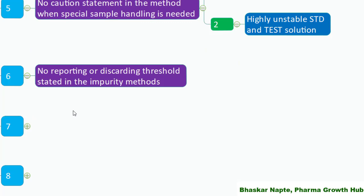The next point: no reporting or discarding threshold stated in impurity methods. It is very important to understand above which level you must start reporting results. To identify the reporting or discarding threshold, you can refer to ICH guidelines Q3A or Q3B. Clearly mention the limit of quantitation and detection limit of your method so the analyst has clear guidance on integration of impurity peaks — for example, below 0.05% all impurity peaks can be discarded.